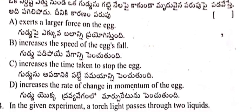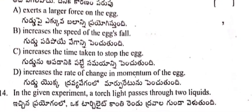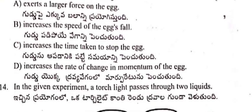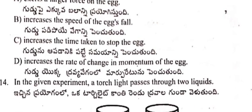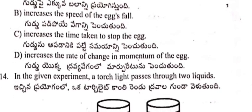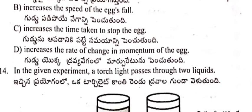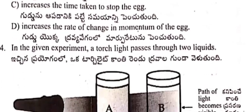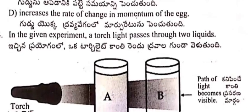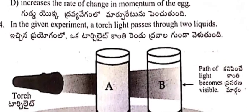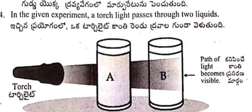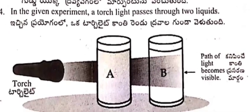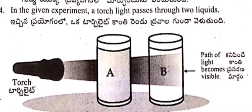This is because the mattress: A) exerts a larger force on the egg, B) increases the speed of the egg's fall, C) increases the time taken to stop the egg, D) increases the rate of change in momentum of the egg.